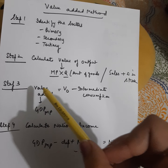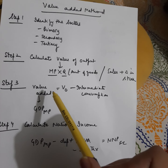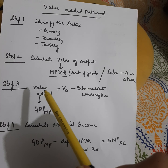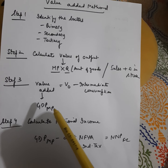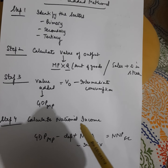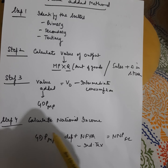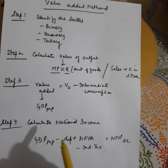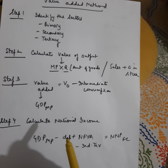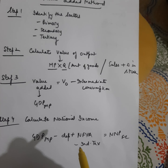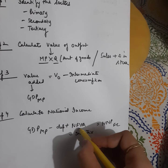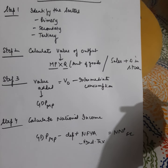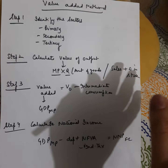Step number three is the calculation of value added. Value added is calculated as value of output minus intermediate consumption. Value added equals GDPmp. Step number four is the calculation of national income. You subtract depreciation, add net factor income from abroad, and adjust for net indirect taxes to get NNPfc.